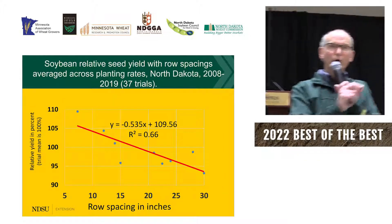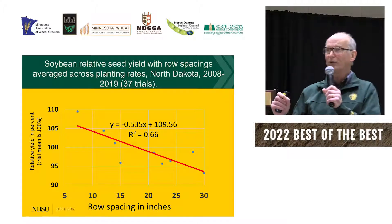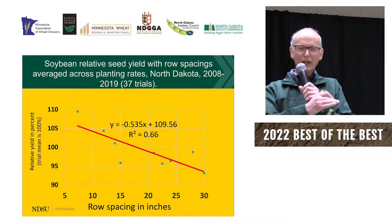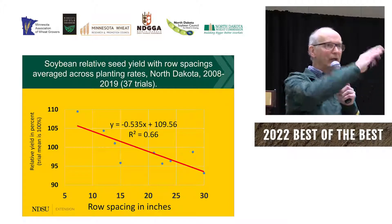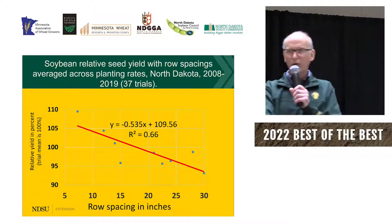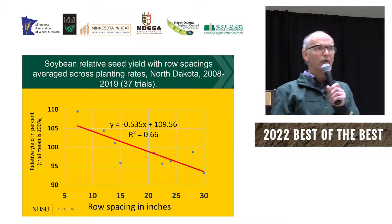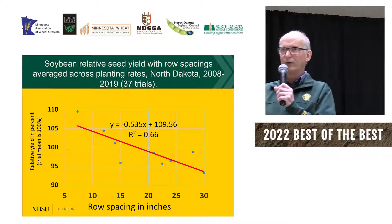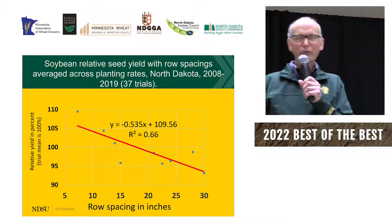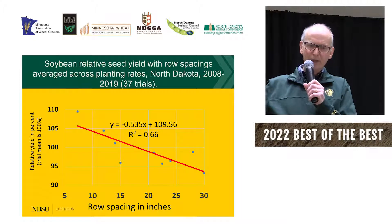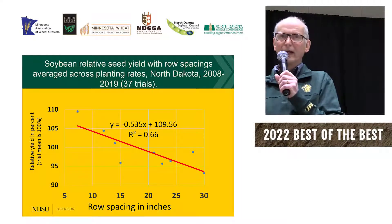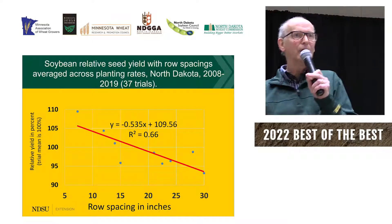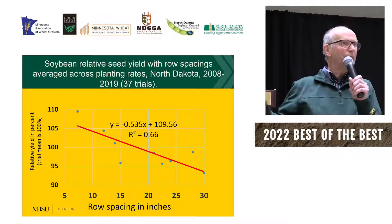Row spacing is another decision — you don't make it yearly, you have a piece of equipment. Looking at 37 trials: on the left is yield in percent, on the bottom is row spacing. Narrower row spacing had higher yield than widest row spacing. We used 30-inch rows. If you look at 30-inch row spacing versus 15-inch, it's about 94% compared to 102% — you give up about 7–8% yield just from row spacing.